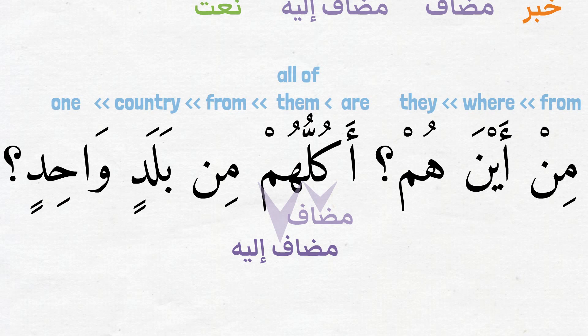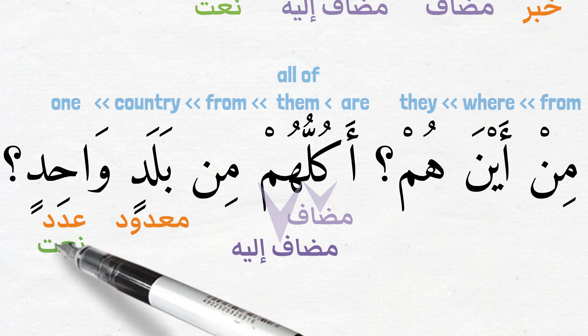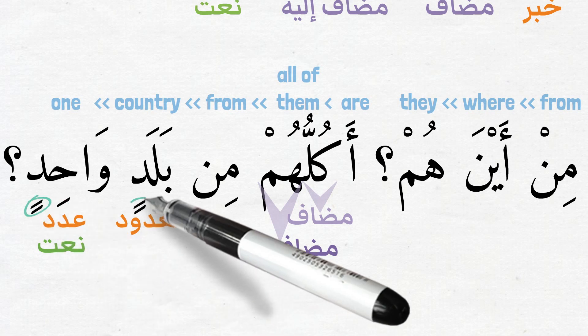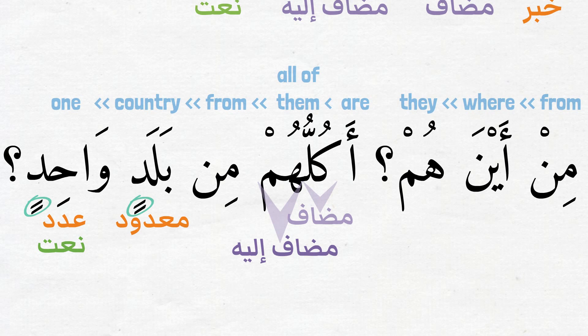Can you find the معدود and عدد here? Remember, معدود is the noun being counted, so it is بلد. The عدد, the number, is واحد. As we discussed before, the counts of nouns with one and two come as نعت and منعوت pair. Here, the اسم واحد is نعت for بلد. That is why it is مجرور, as it follows the case of منعوت بلد. بلد is مجرور because of the حرف جر من.